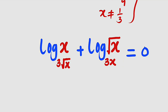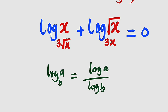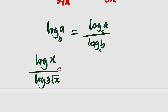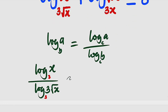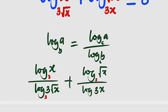Here is the equation. Let us apply the change of base formula: log_b(a) = log(a)/log(b). We choose base 3. So the first term becomes log₃(x) divided by log₃(3√x), and the second term becomes log₃(√x) divided by log₃(3x).